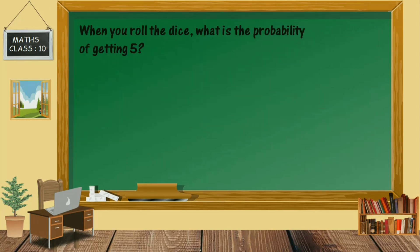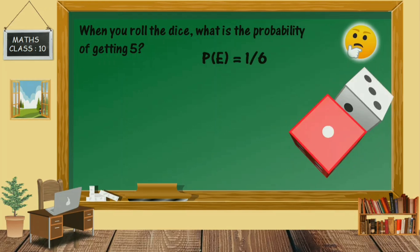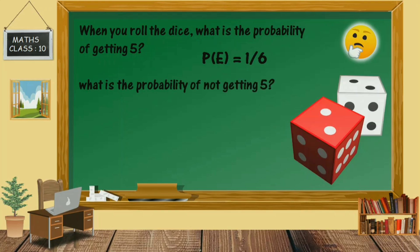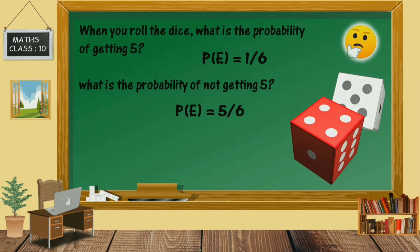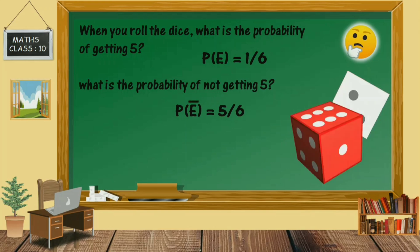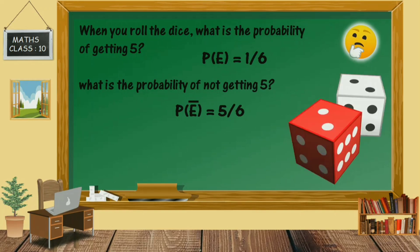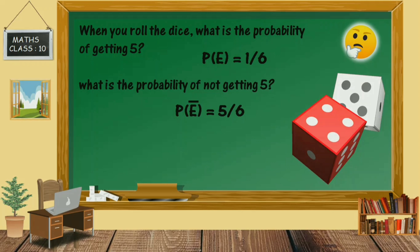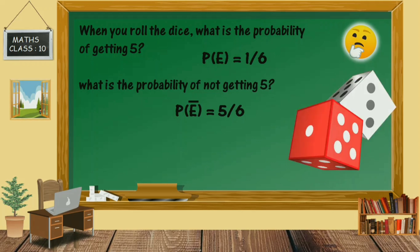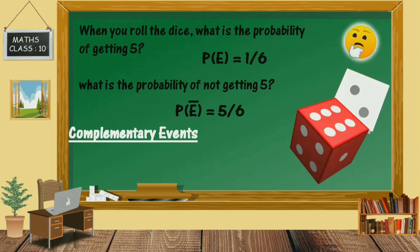When you roll the dice, the probability of getting 5 is P(E) equal to 1 by 6. Now, what is the probability of not getting a 5? The probability is going to be 5 by 6. This is denoted by P(E bar). So P(E bar) equals 5 by 6, because this represents not getting the number 5 — the event 5 not happening. This is called the complement of the event. E and E bar are the complementary events.